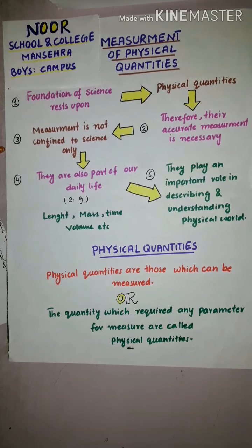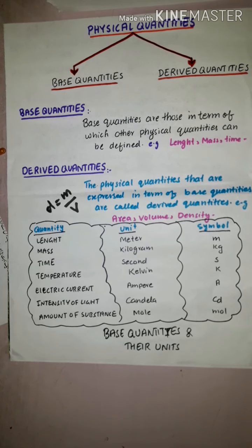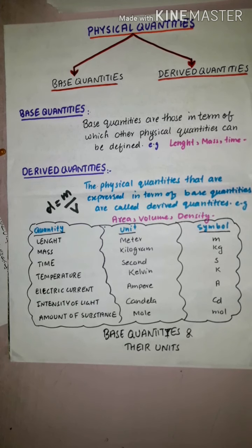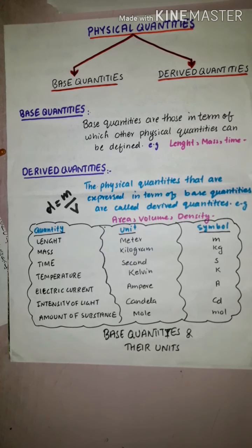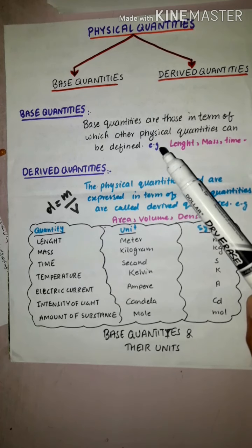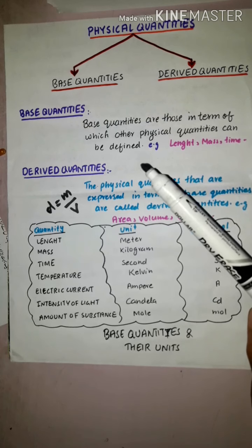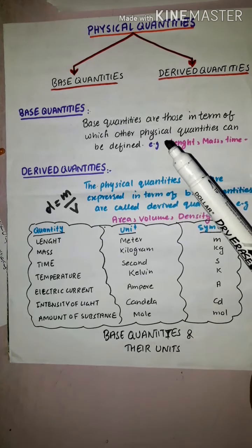Now, what are the types of physical quantity? There are basically two types of physical quantities: first is base quantity, and second is derived quantities. Base quantities are those in terms of which other physical quantities can be defined. Base quantities are those quantities with whose help we define other physical quantities.